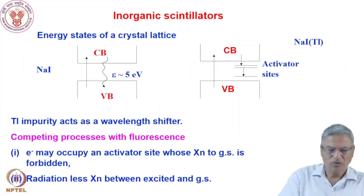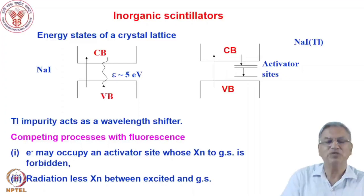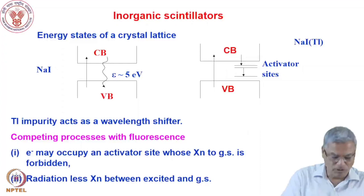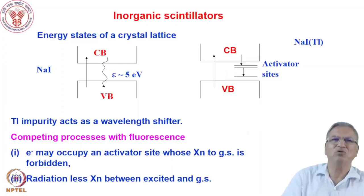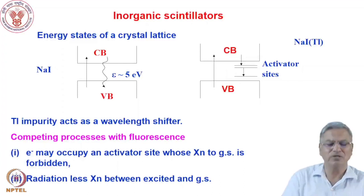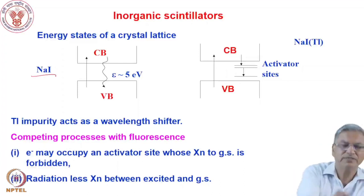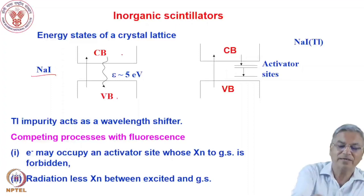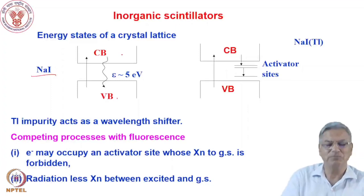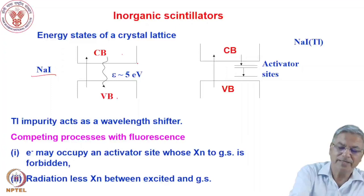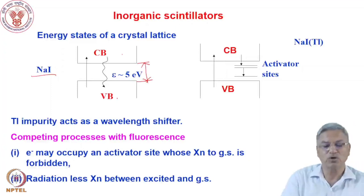The workhorse of gamma counting is the inorganic scintillator, particularly sodium iodide doped with thallium — NaI(Tl). Inorganic scintillators are based on their band structure. In a single crystal of sodium iodide, you have a valence band and a conduction band. It is an insulating material with a band gap of the order of 5 electron volts.